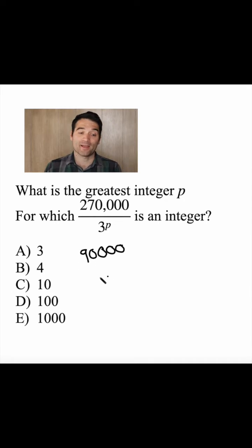I could divide that by 3, and that would be 30,000. I could divide that by 3, and I'd have 10,000.